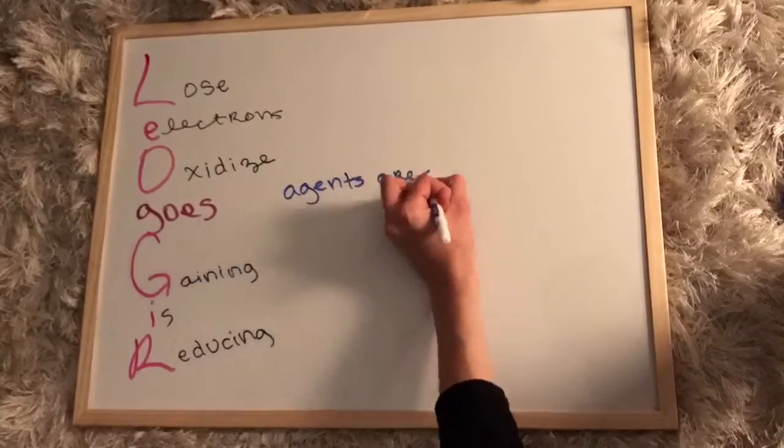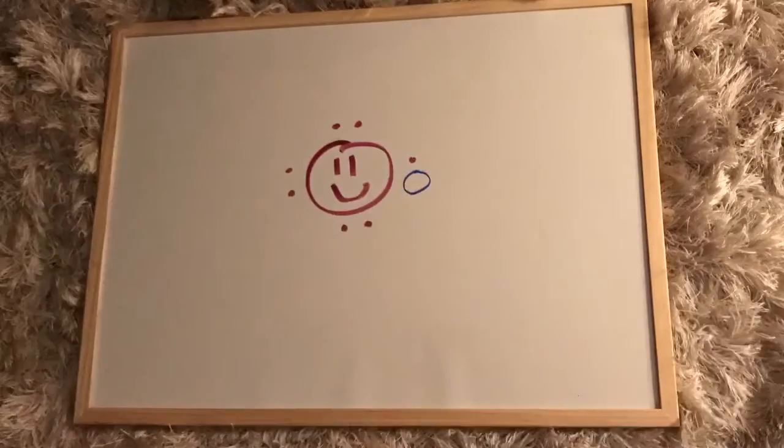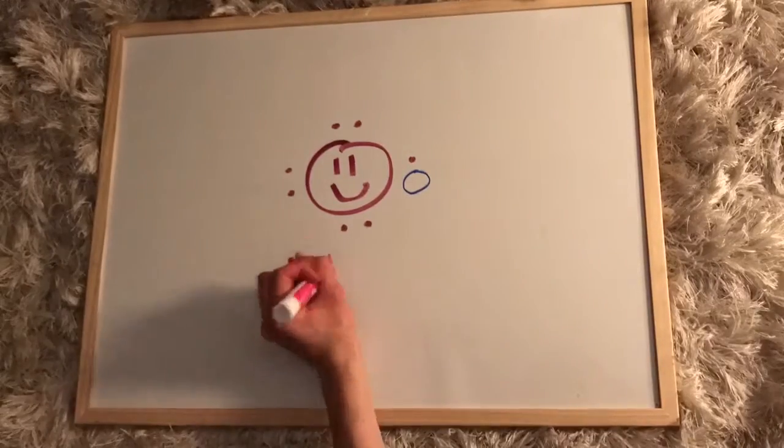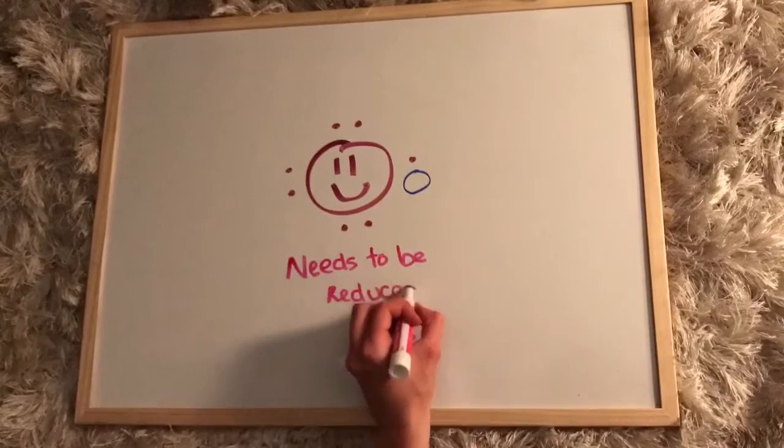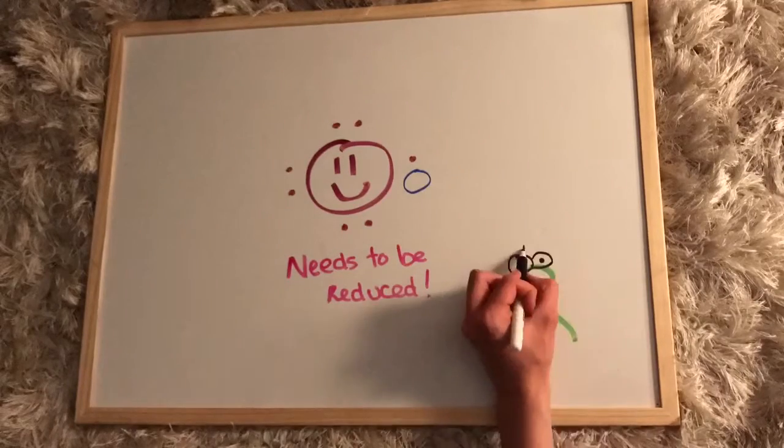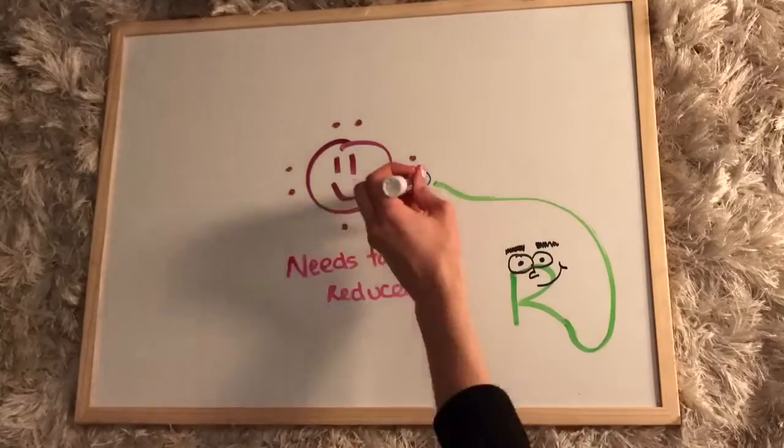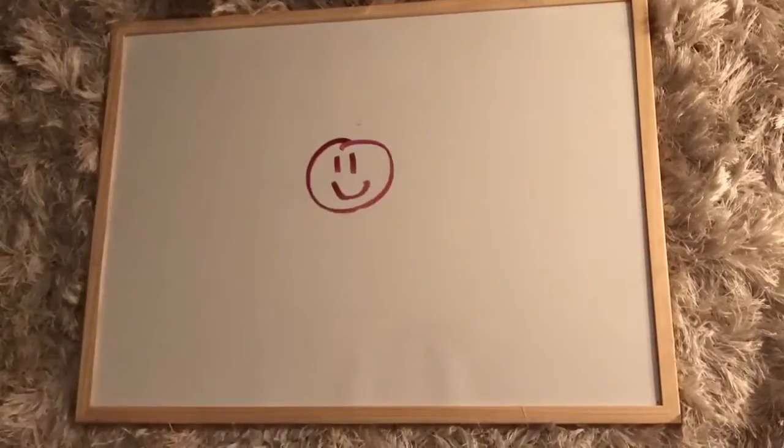Now if you look for agents, that definition is a little bit flopped. Let me explain. If I have an element that has seven valence electrons and I need one more, then I need to be reduced. So in order to do that, I need a handy dandy reducing agent to donate an electron to my outer shell. So the reducing agent is actually being oxidized because it's losing an electron.